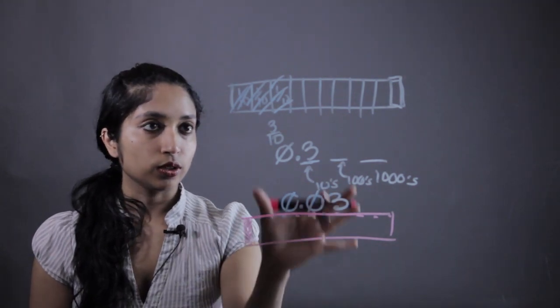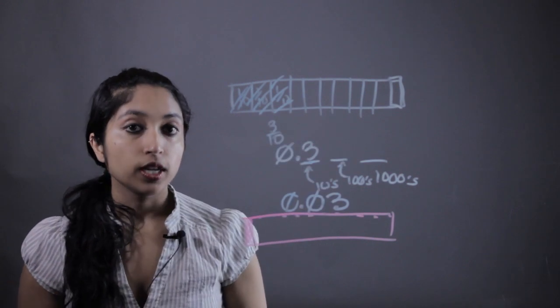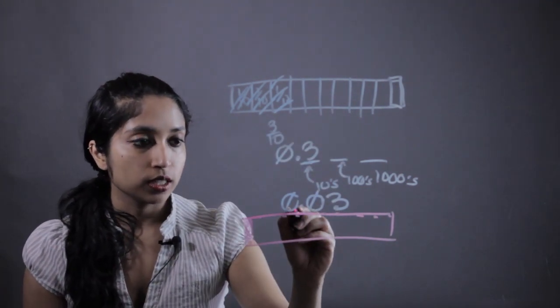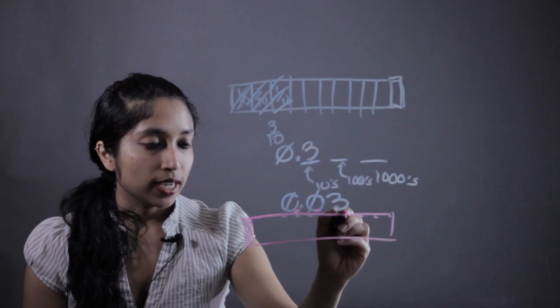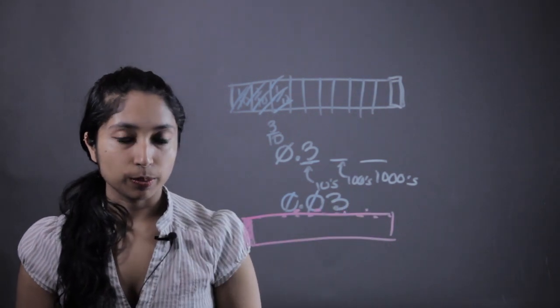And obviously, if you were to line these two up, this is much smaller than that one. And that's a good way for them to help visualize and start understanding what the tens, the hundreds, and the thousands place means.